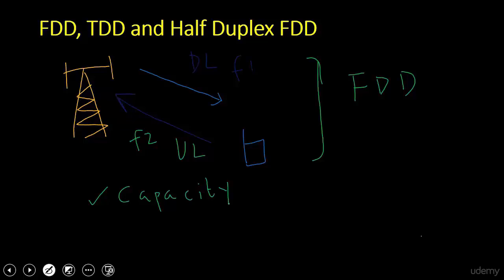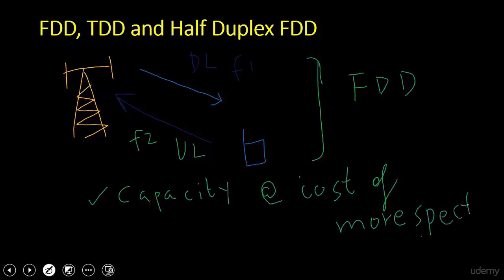There is always a trade-off. FDD gives better capacity, but the trade-off is that this higher capacity comes at the cost of more spectrum. You are using not just one unpaired spectrum — you are using two different spectrums, one for uplink and one for downlink.